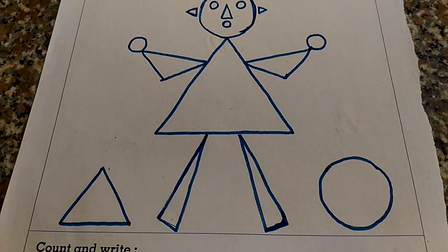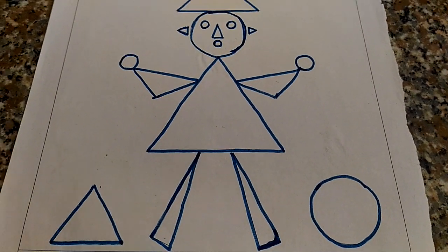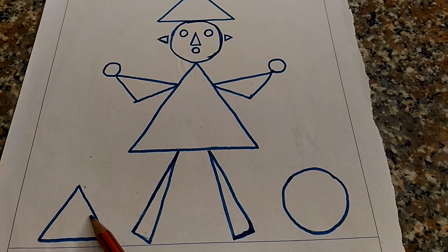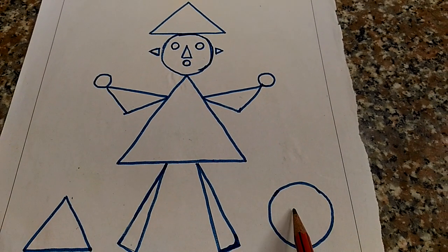See here. What shape is this? This is a triangle. This is a circle.